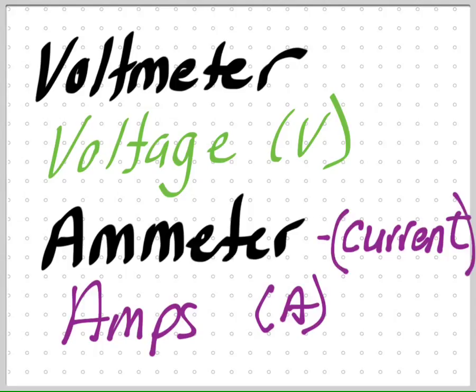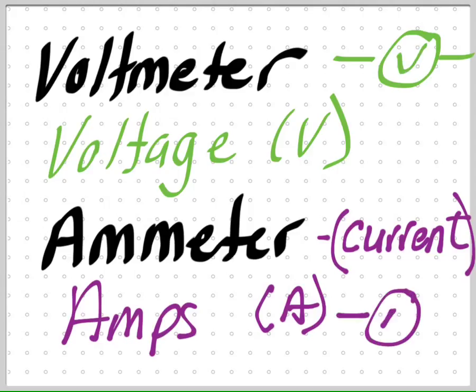On your circuit diagram, the symbol for the voltmeter looks like a circle with a V, and the symbol for the ammeter looks like a circle with an A. Simple — A for amps, ammeter; V for volts, voltmeter.